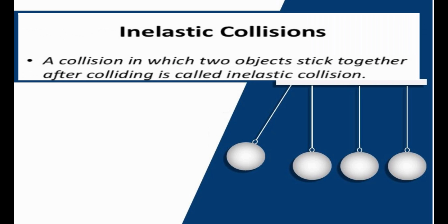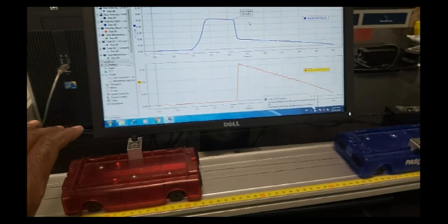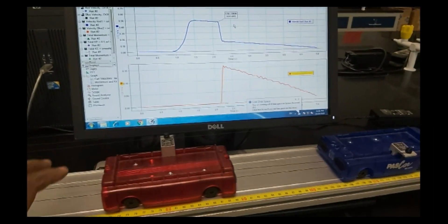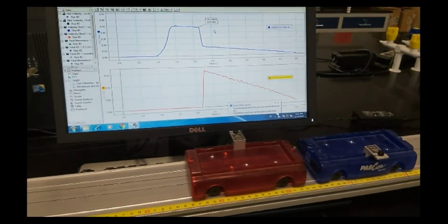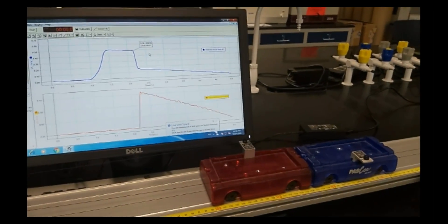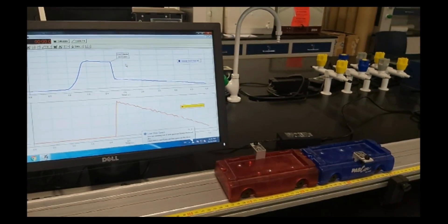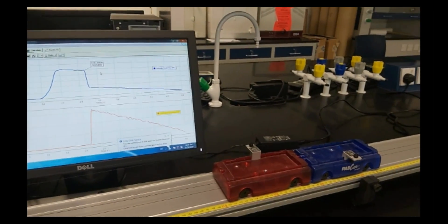In inelastic collision, a collision in which two objects stick together after colliding is called a perfectly inelastic collision. Use the same mass carts with the sides toward each other so the carts will stick together. This is a totally inelastic collision.